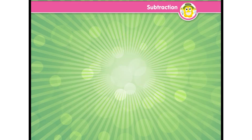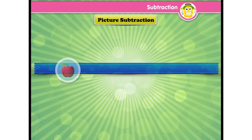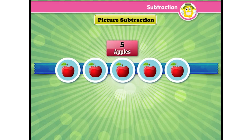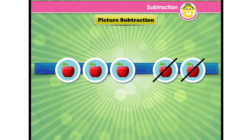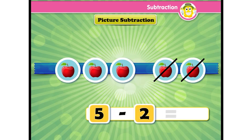Let's learn picture subtraction by the take-away method. Here are five apples. Let's subtract two from five. It is done by taking away two or crossing two out. Now count the rest — that is the difference. So five minus two is three.